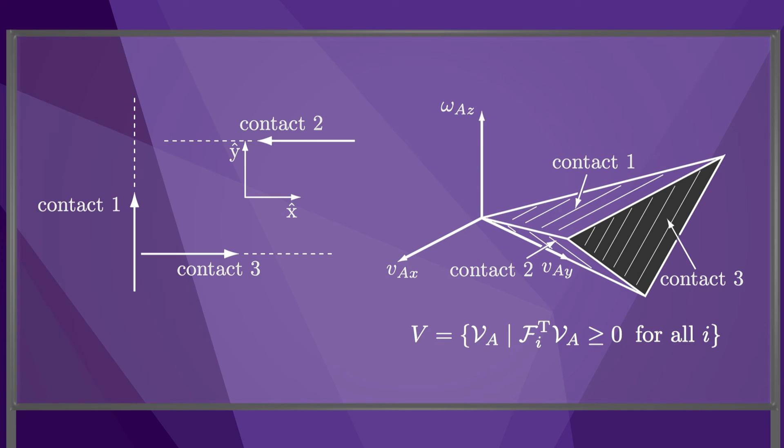Twists strictly inside the cone cause breaking at all contacts. Twists on a face of the cone cause sliding or rolling at one of the contacts. Twists on an edge of the cone cause sliding or rolling at two of the contacts.